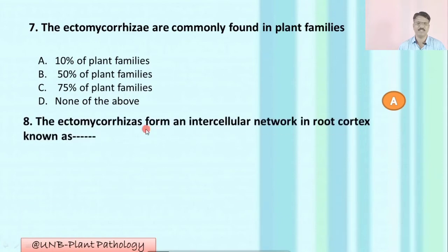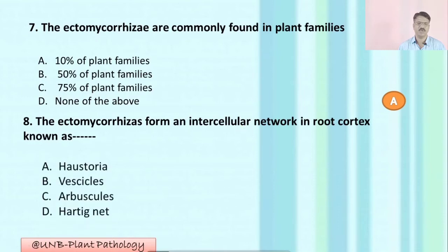Question number eight: Ectomycorrhizae form an interstellar network in root cortex known as — A: haustoria; B: vesicles; C: arbuscules; D: Hartig net. The correct option is D: Hartig net.